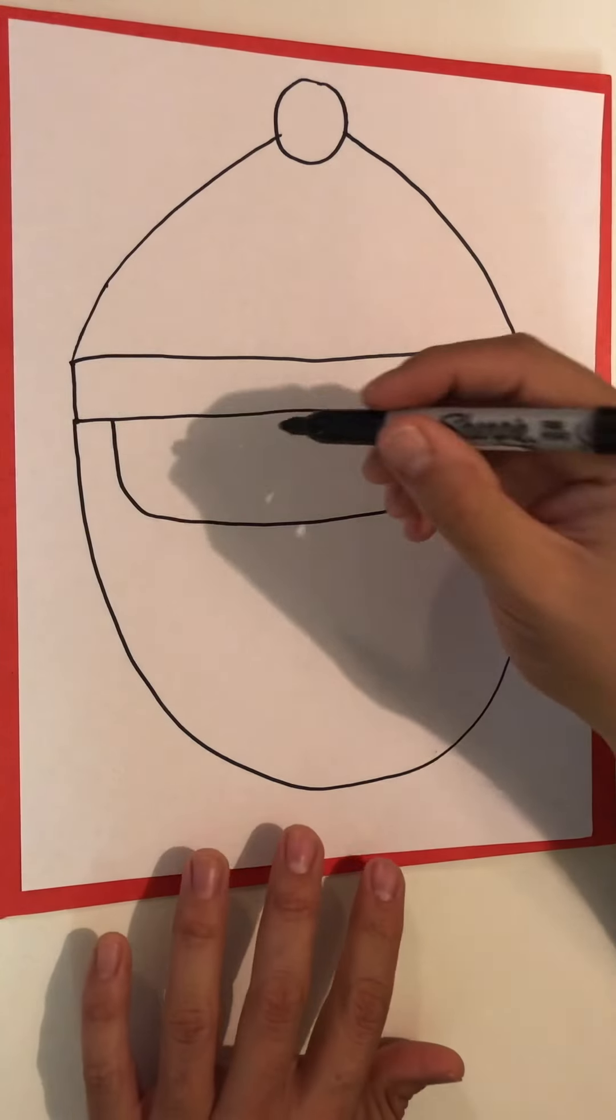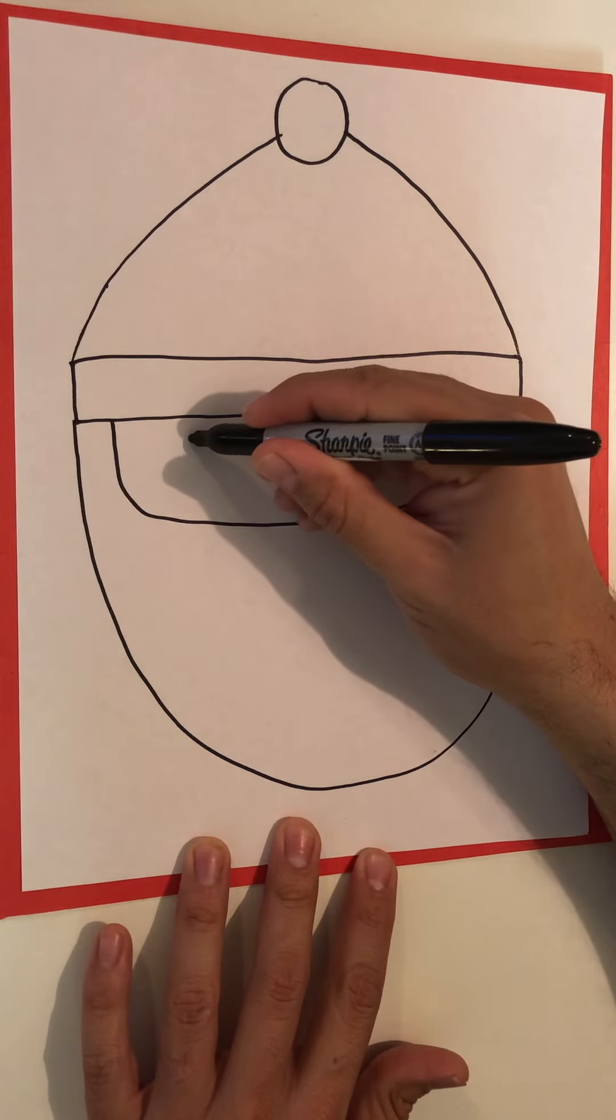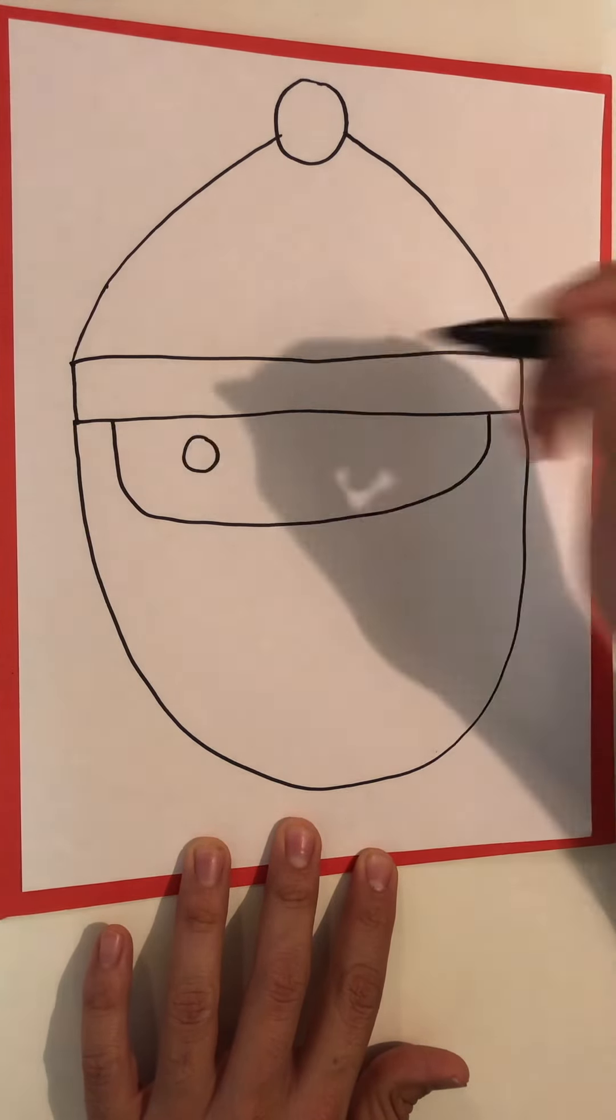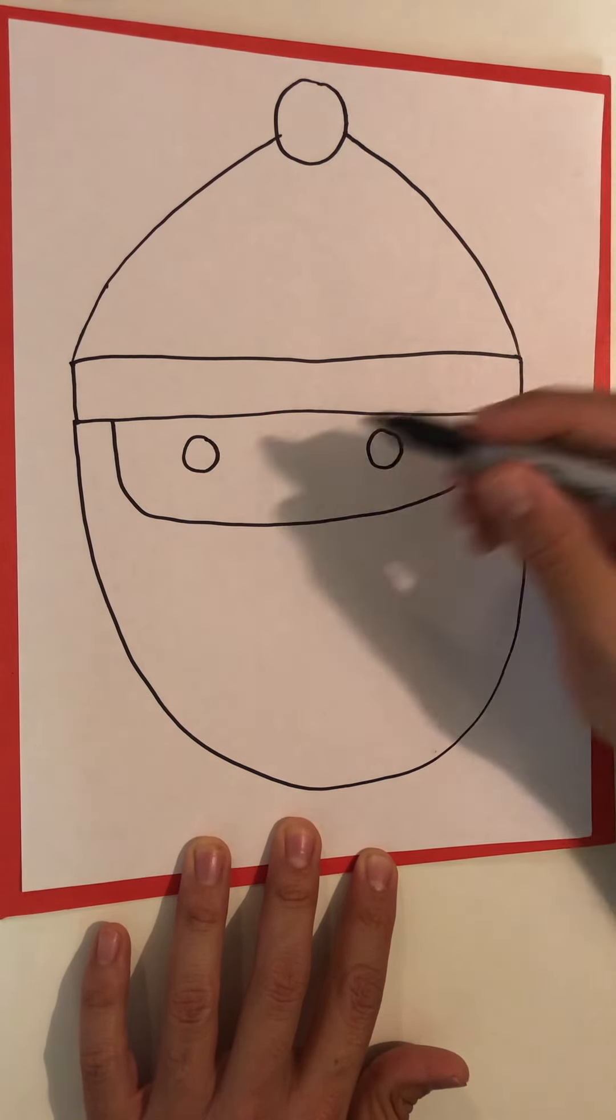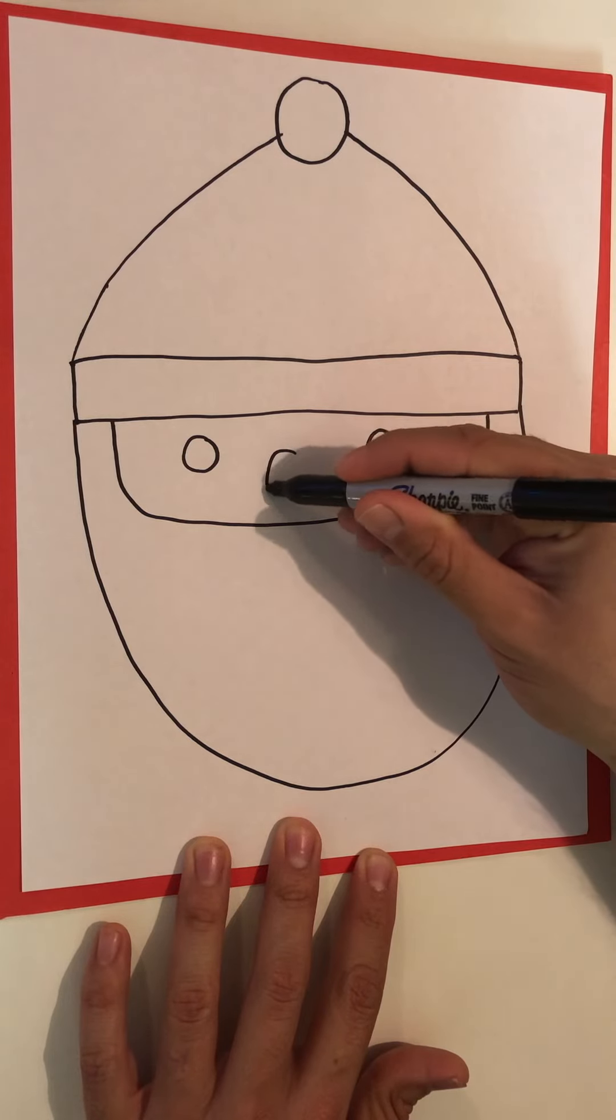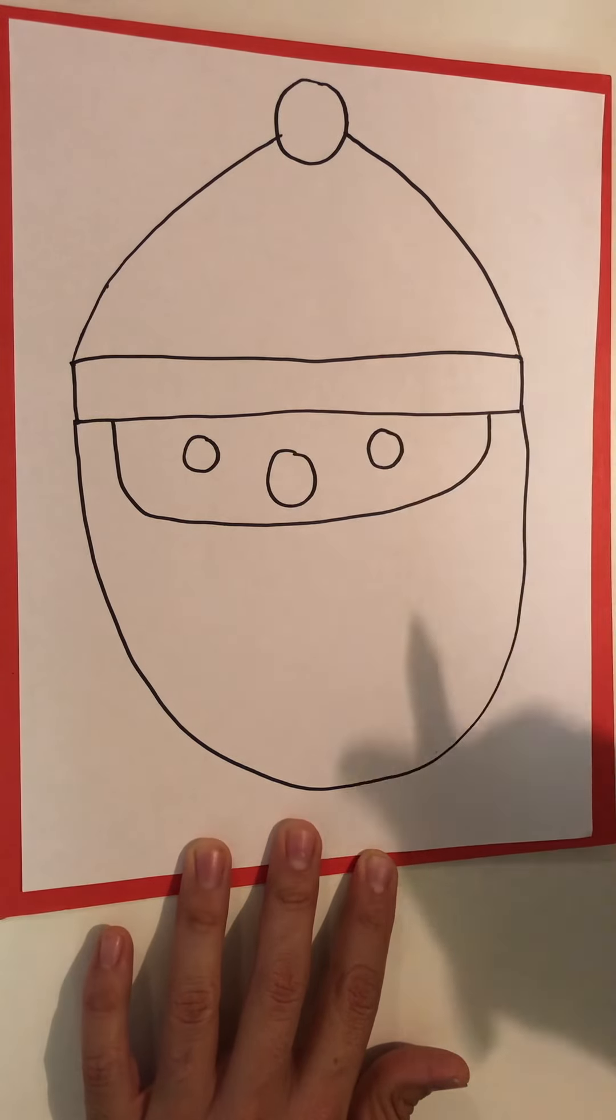Now we're going to do a circle here and another circle here and a bigger circle between them, like so.